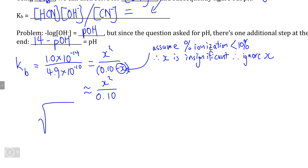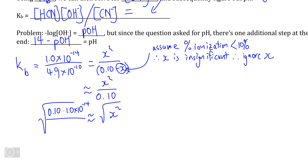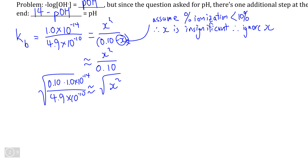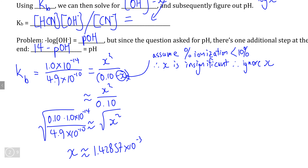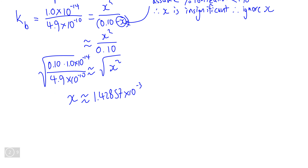This means that if we want to solve for X, all we need to do is multiply both sides by the denominator, 0.10 mol/L, and then take the square root of both sides to cancel out X squared. So X equals the square root of 0.10 mol/L times Kw, 1.0 × 10⁻¹⁴, divided by the Ka value of our conjugate acid, 4.9 × 10⁻¹⁰. Putting all of this into a calculator gives X ≈ 1.42857 × 10⁻³. We're not rounding here because we need to take the negative log of X to find pOH, and that's where our rounding begins.